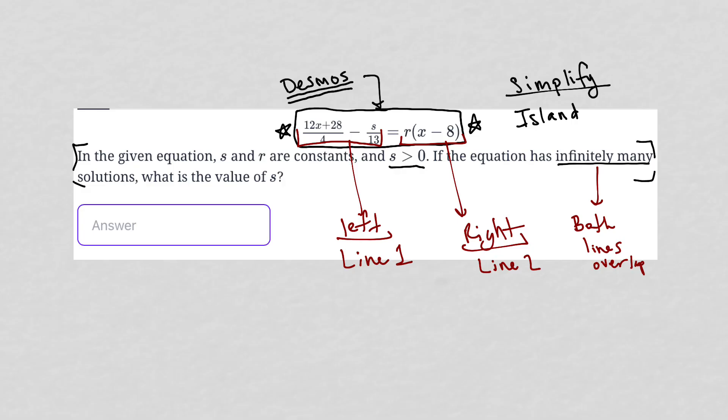And then the question told us that S was greater than zero. So we can adjust that in Desmos to make that true. And of course, the higher bound there you have complete control over. Just continue to increase that until you get where you need it to be.